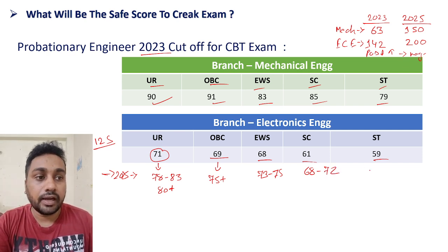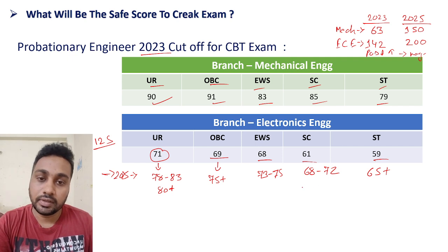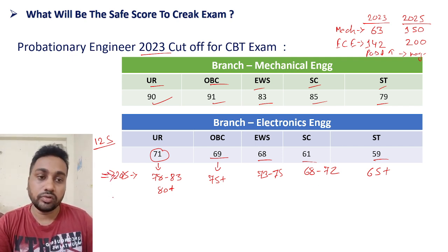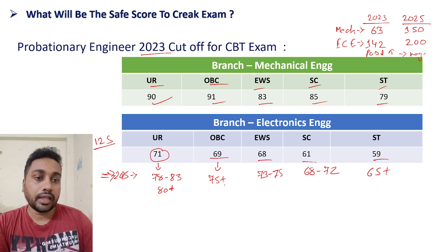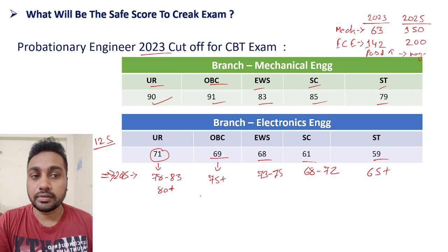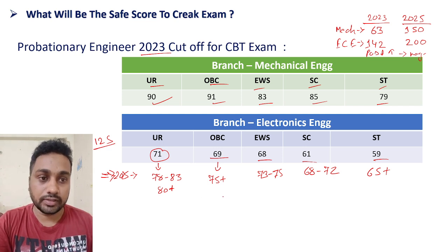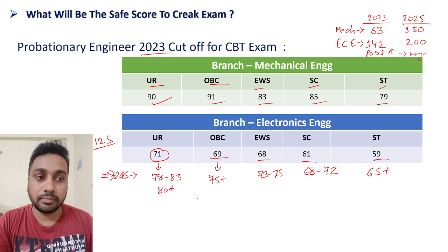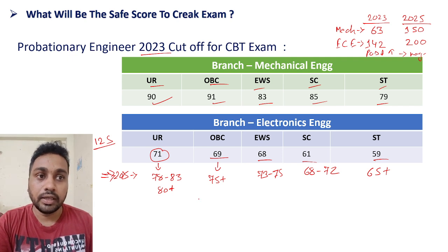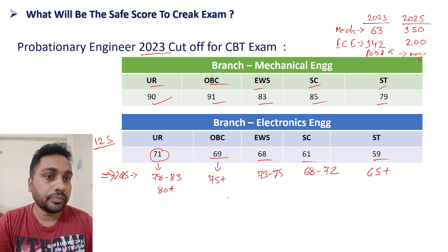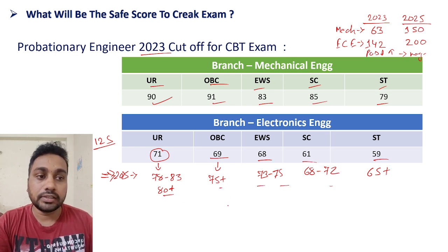For ST category, try to get 65 plus marks. This is what you can expect for the 2025 cutoff. It may increase or decrease, but in my view it will increase because so many people are fully prepared, so you need to grab at least these marks.